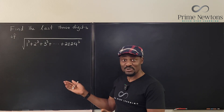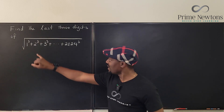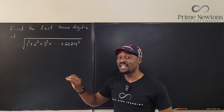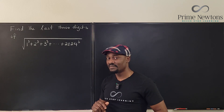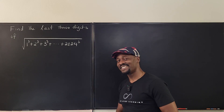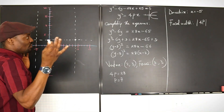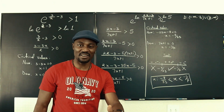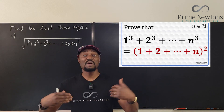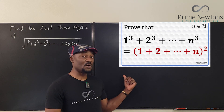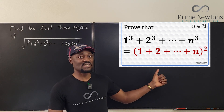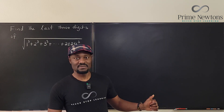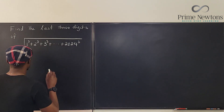A problem like this does not expect you to do that. All we have to do is recognize that the sum of all the cubes of natural numbers up to any point is the same thing as the square of the sum of those natural numbers. Just like the quadratic formula, you must know that the sum of the first n natural cubes equals the square of the sum of the first n natural numbers.